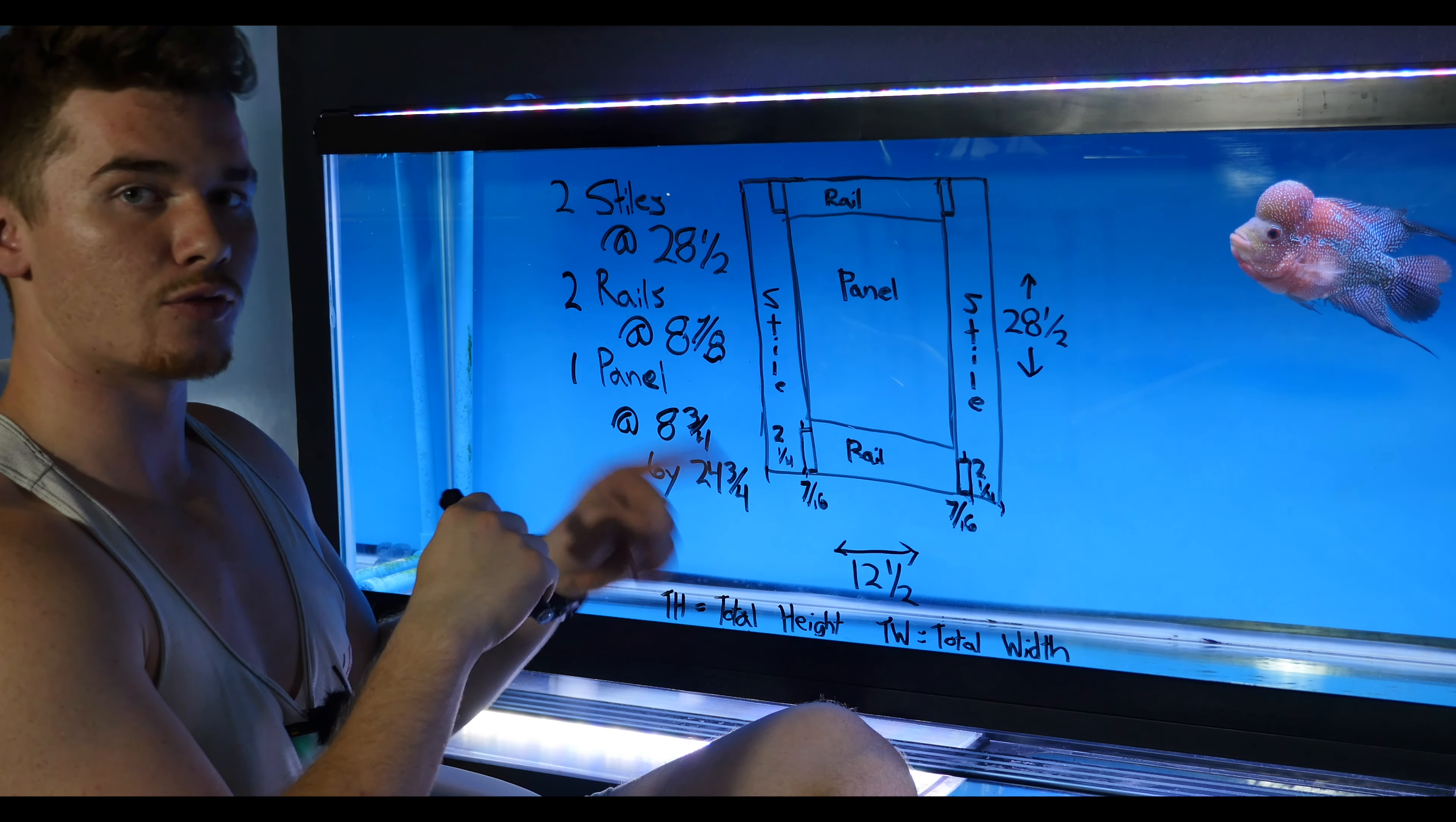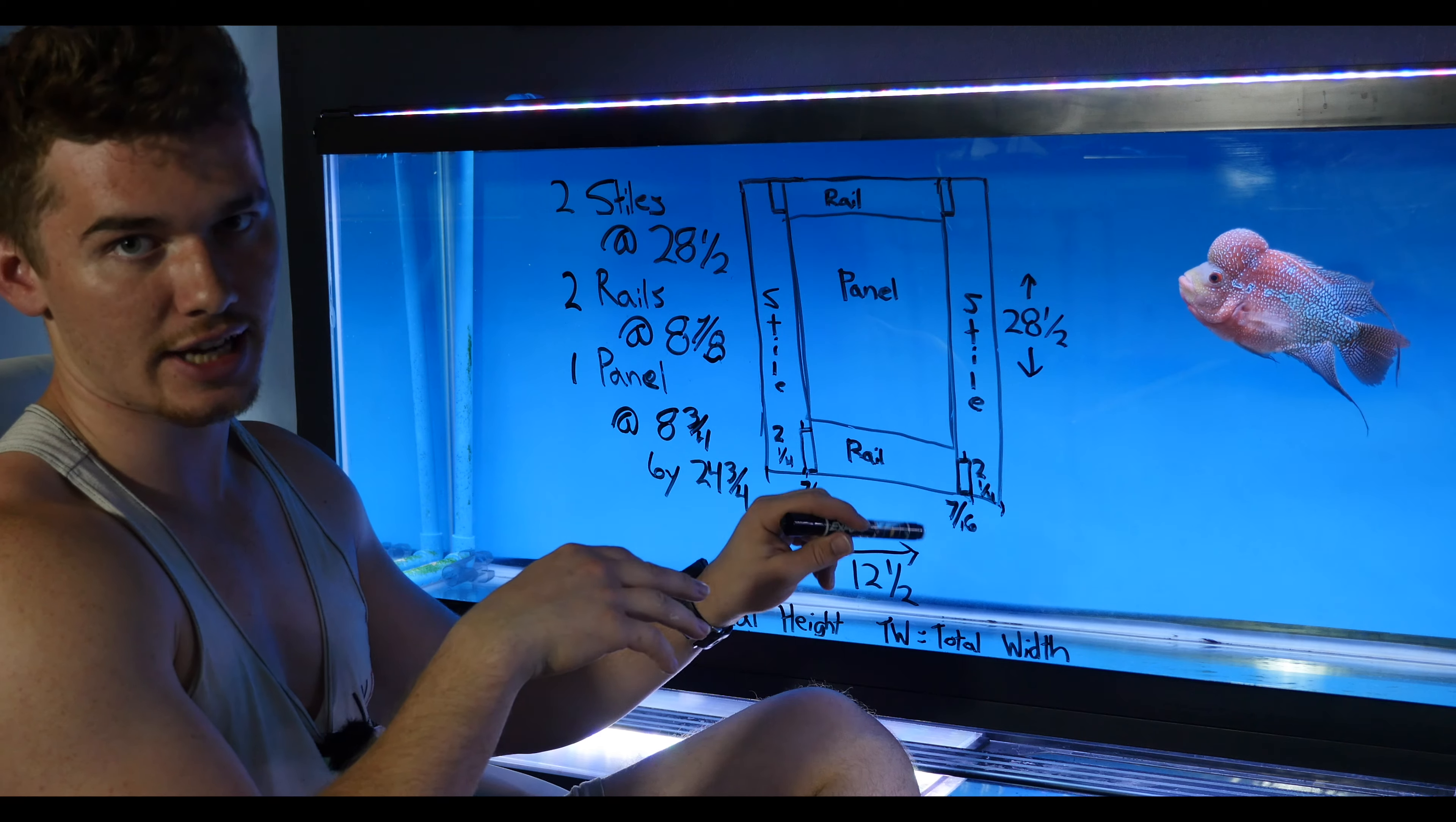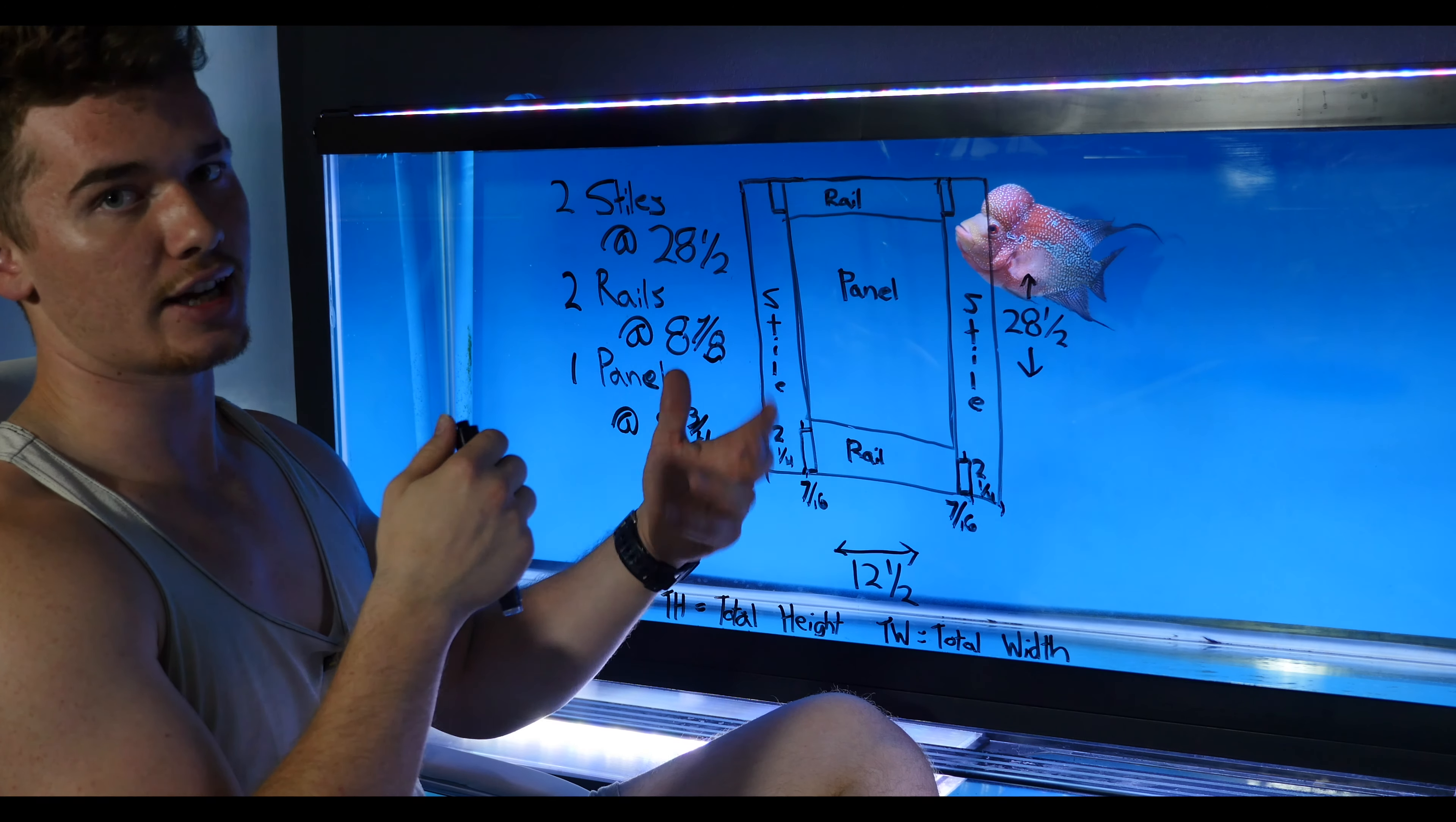That's the material list if you're following the math and building the door the way that I am right now. To recap, our rails and styles are two and a quarter wide, and our tongue and groove, our joinery, is seven-sixteenths by seven-sixteenths or seven-eighths when put together. If you're doing wider rails and styles, this math will just change accordingly to that. So if you were doing two and a half, you would add half of an inch to the three and five-eighths and the three and three-quarter.